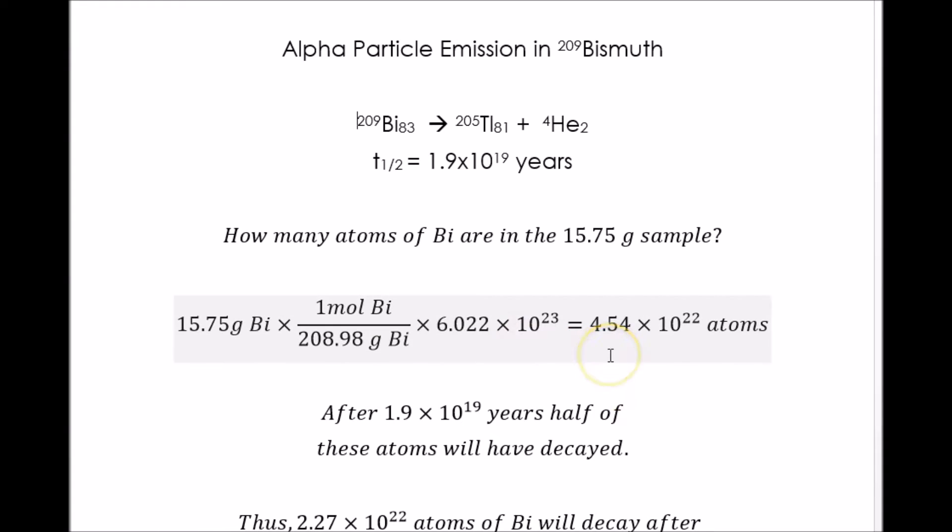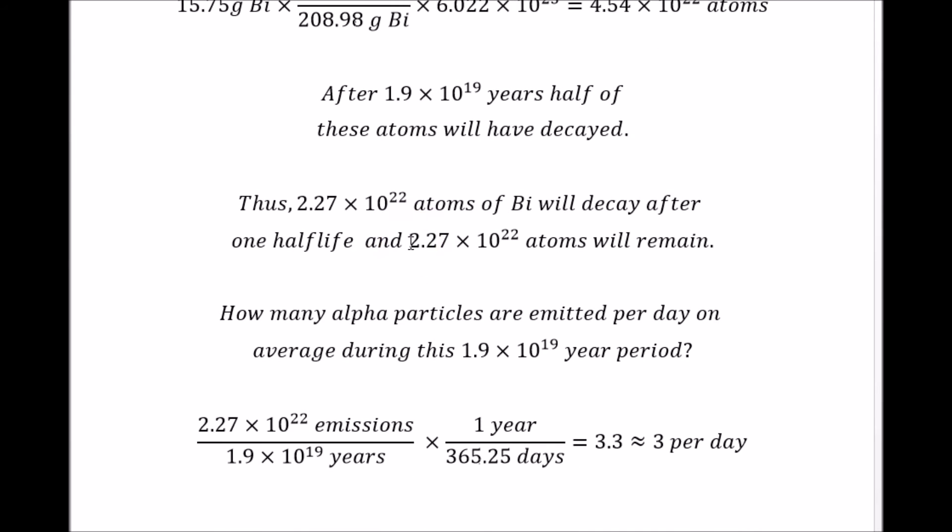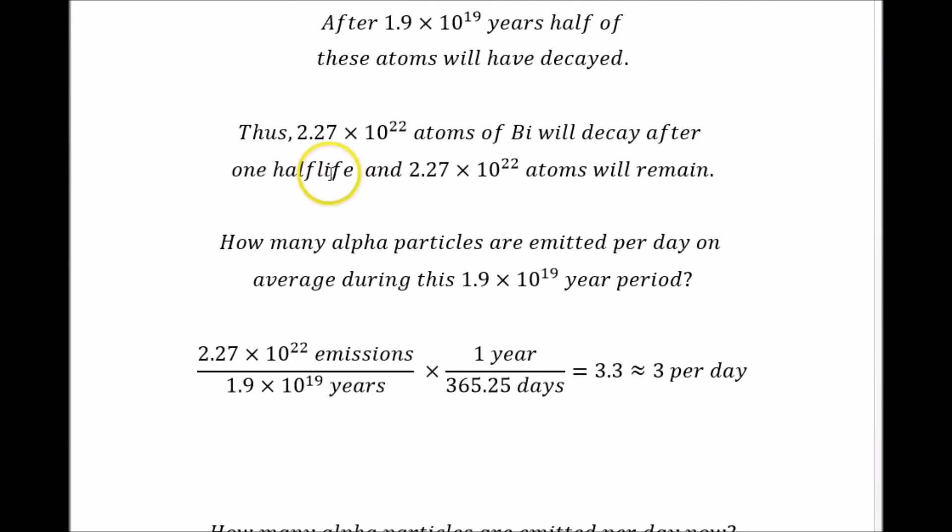After 1.9 times 10 to the 19 years, half of these atoms will have decayed. Thus, 2.27 times 10 to the 22 atoms of bismuth will decay after a half-life of 1.9 times 10 to the 19 years, and 2.27 times 10 to the 22 atoms will remain.